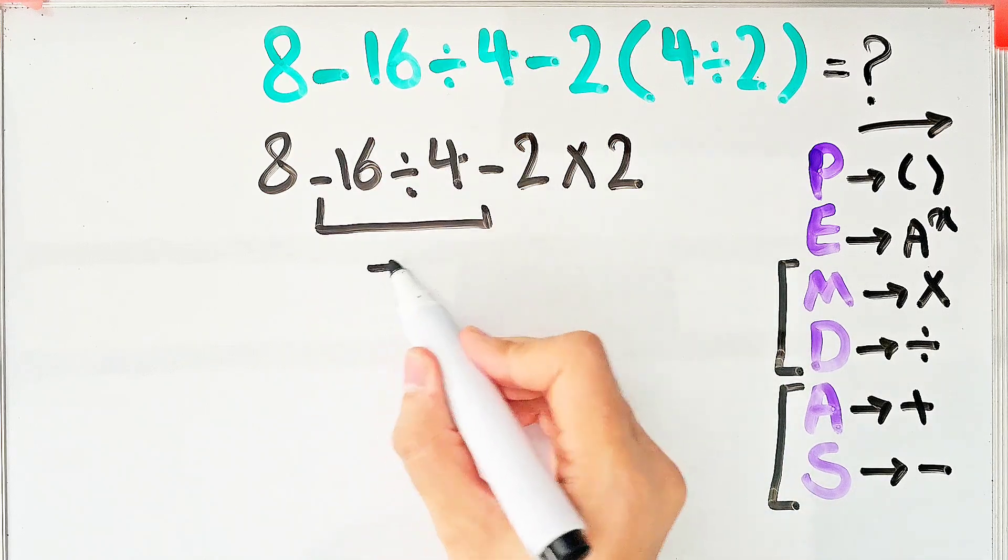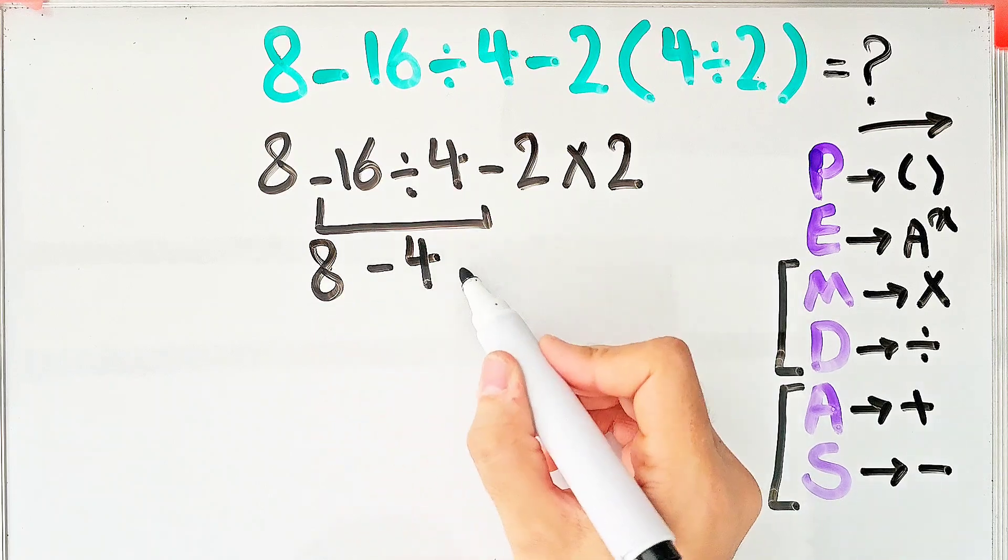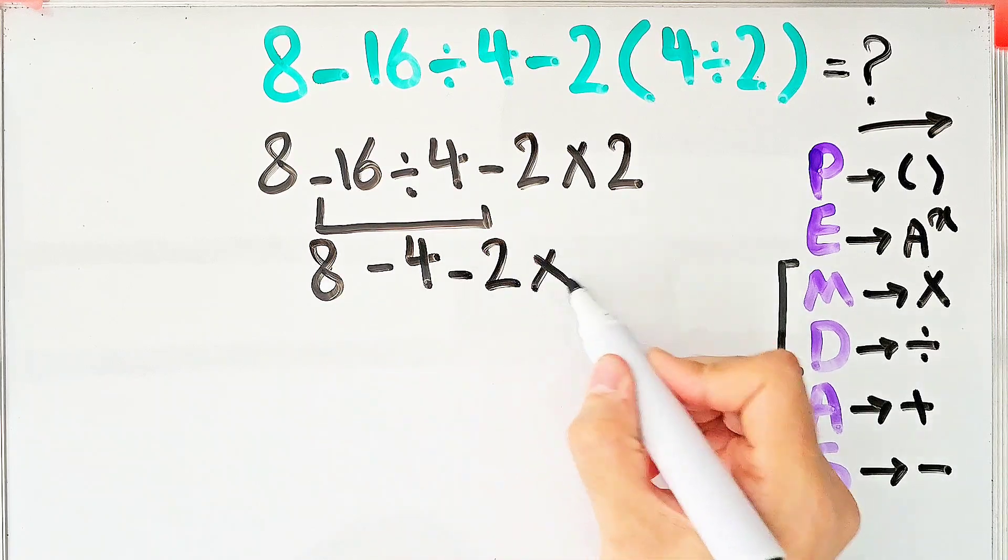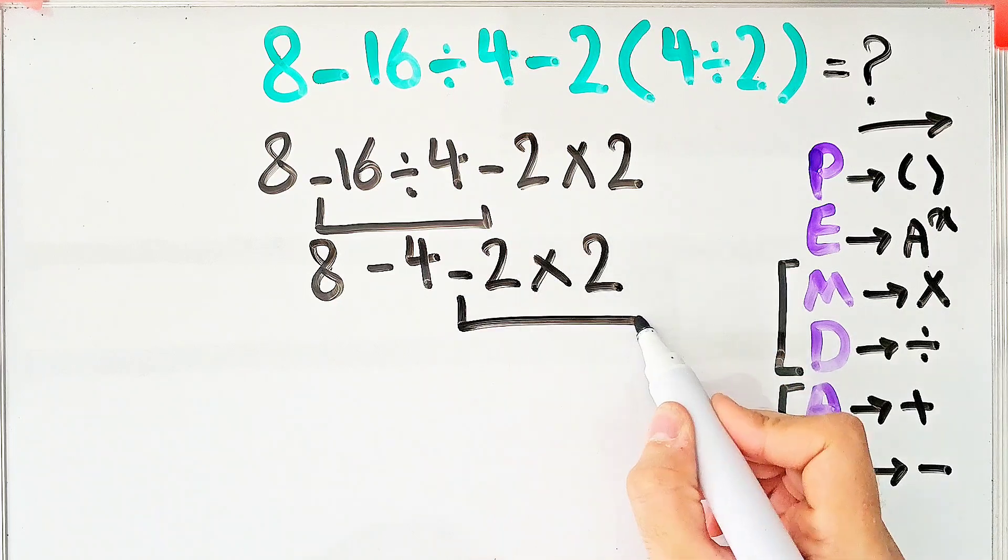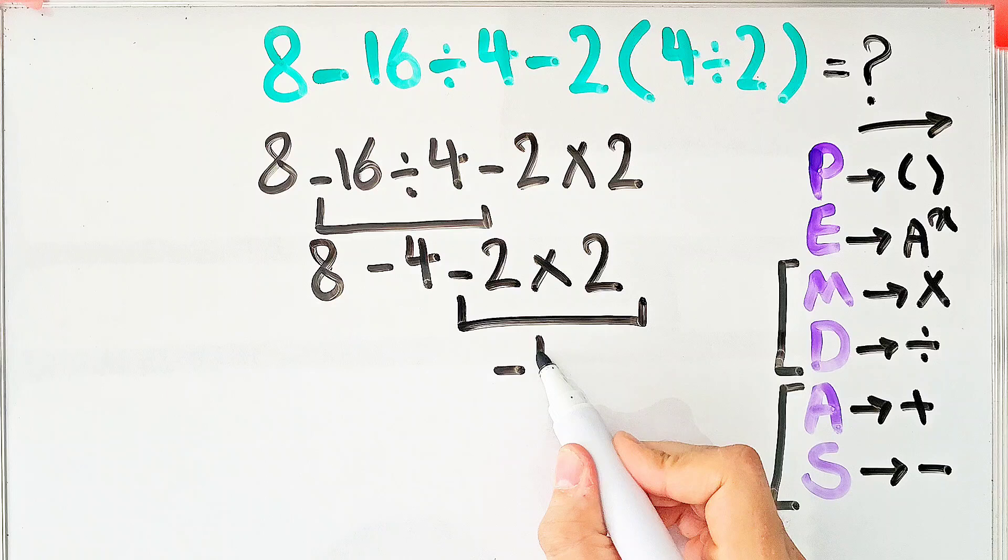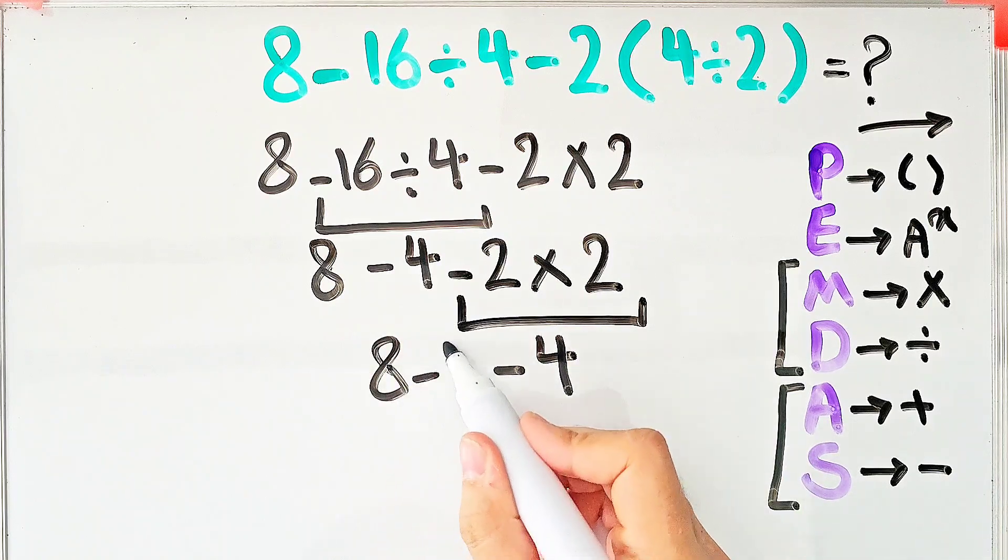16 divided by 4 equals negative 4. 8 minus 4 minus 2 then times 2. In this step, we do this multiplication. Negative 2 times 2 equals negative 4. Now we have 8 minus 4 minus 4.